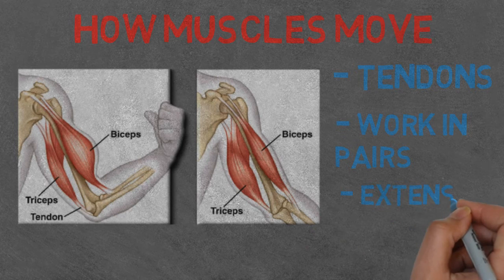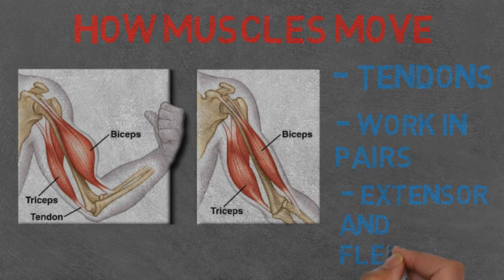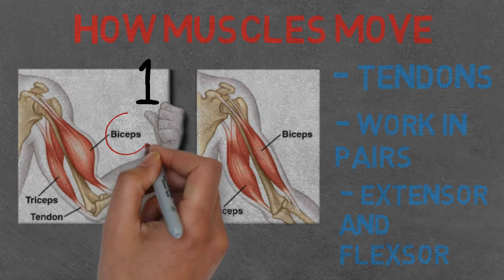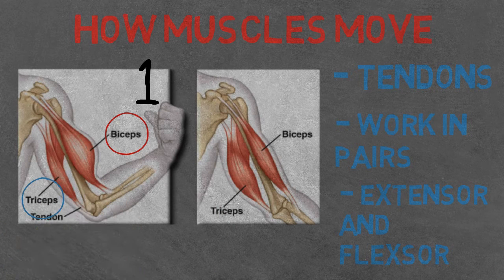If you look at picture one, the bicep is contracting, or the muscle is shortening, bringing your forearm up, while the tricep is extending or lengthening the muscle, which is allowing the movement to occur.